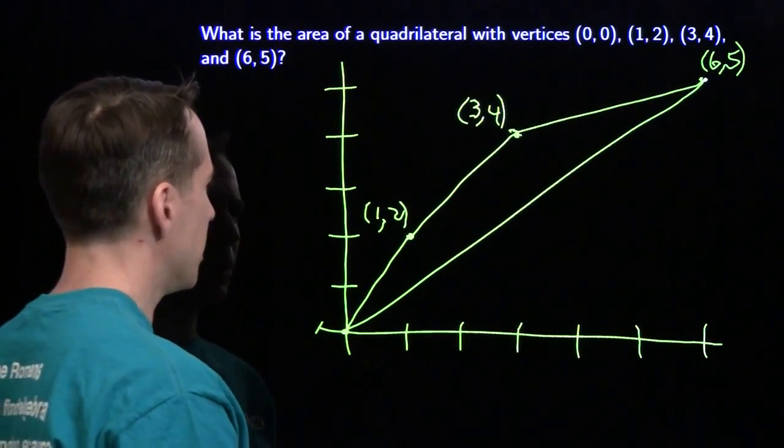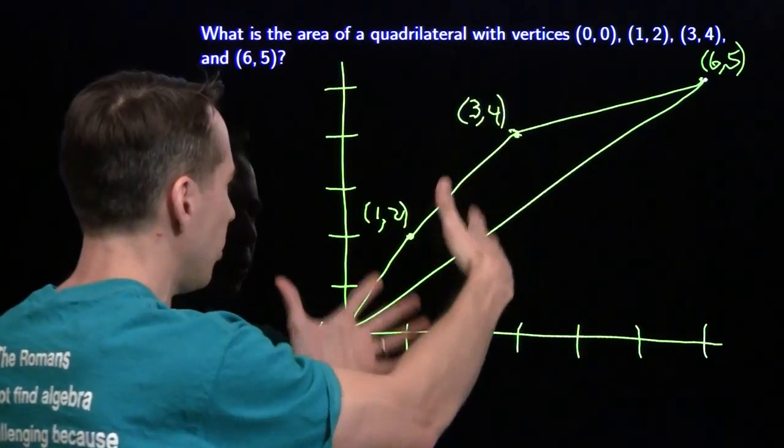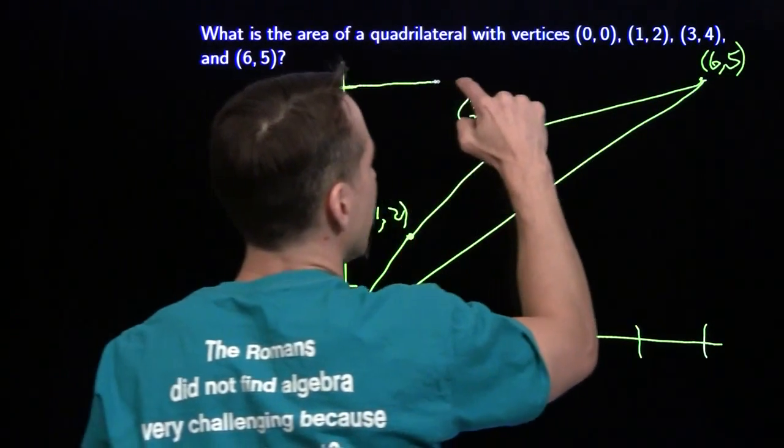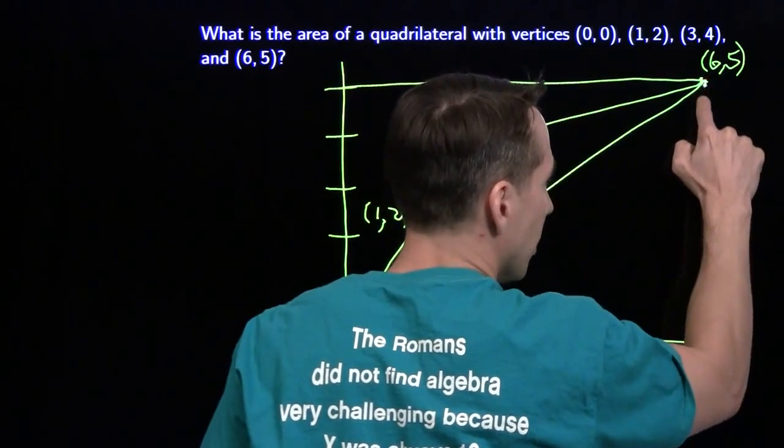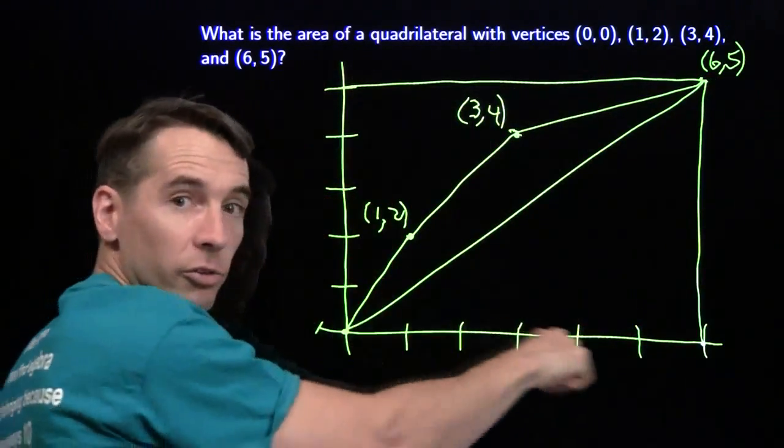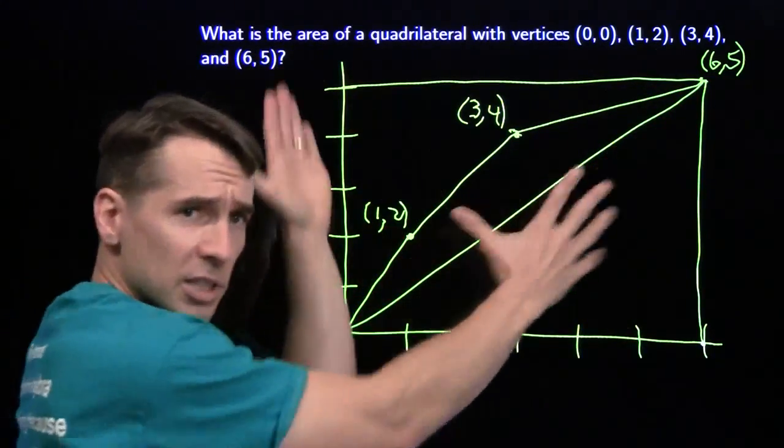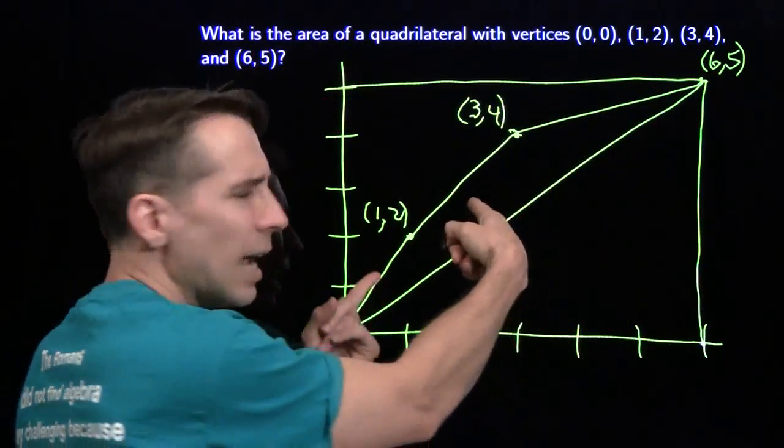One figure I see that I definitely can handle is I can put this in a big box. Understand rectangles, understand right triangles. So I've got this big box here, it's 6 by 5, its area's 30, and I can cut pieces out to get this.